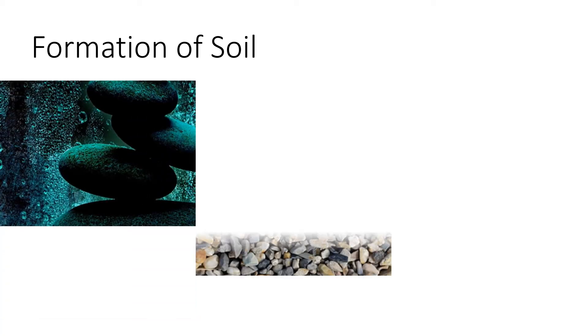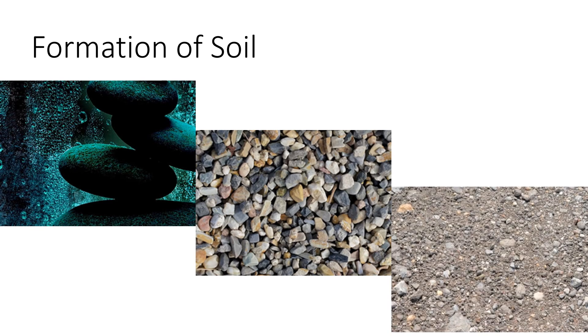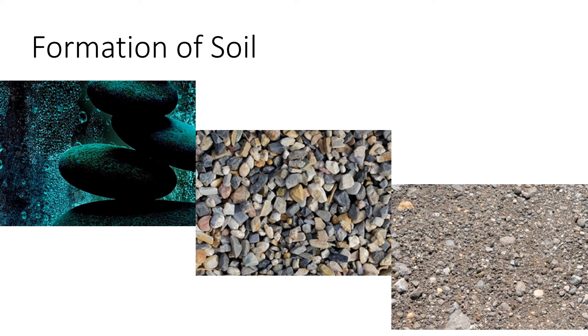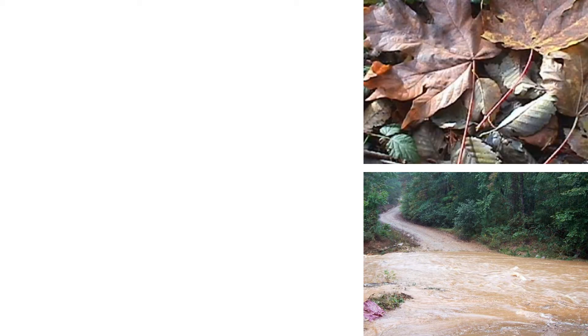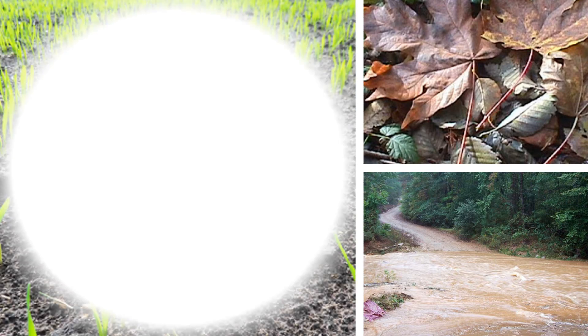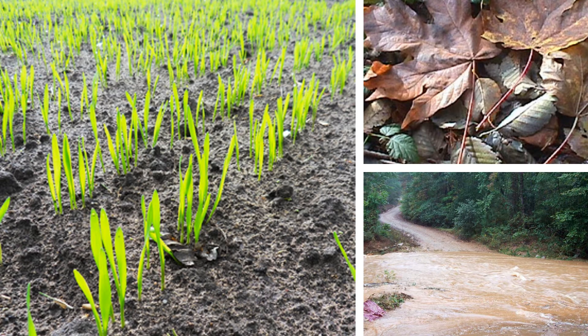How is soil formed? Rocks on the earth are broken down into small pebbles by rain, flowing water and the roots of plants. These pebbles break down further to form tiny bits of soil. Wind, rain and rivers carry the soil to different places. Remains of dead plants and animals mix with the soil to make it fertile. It takes more than 100 years for nature to make just 1 cm of soil.